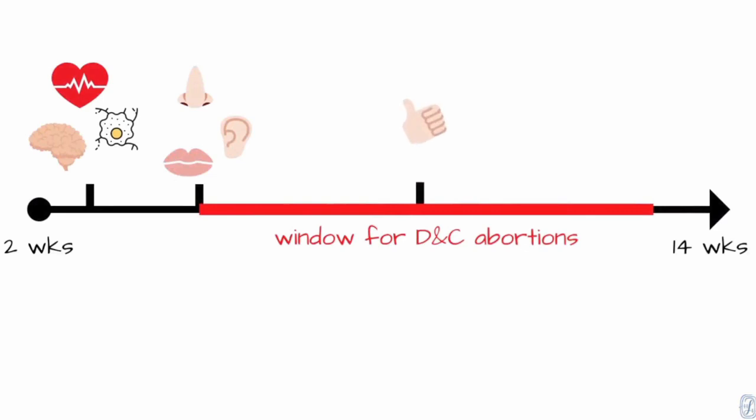By nine weeks, the pre-born child sucks his thumb. At ten weeks, all sections of his body are sensitive to touch. He swallows, squints, frowns, and puckers up his brow.